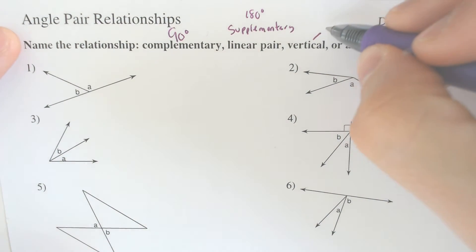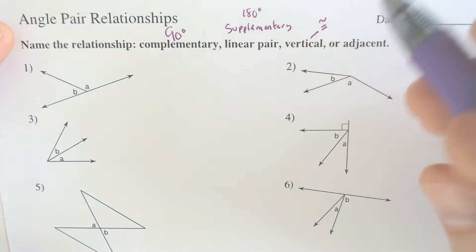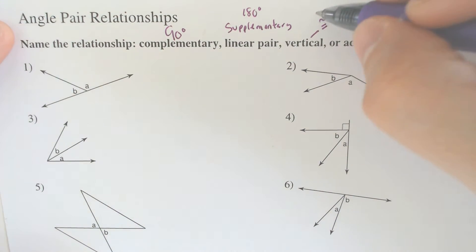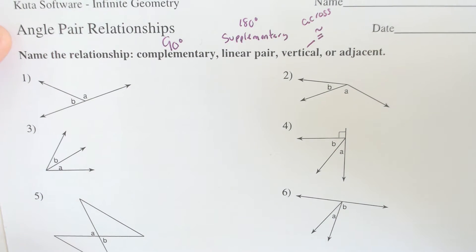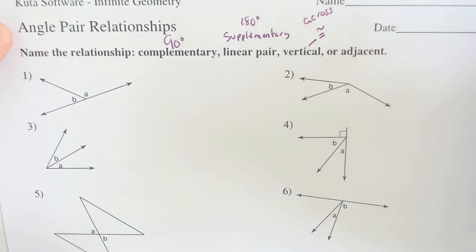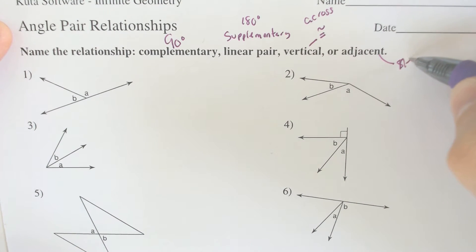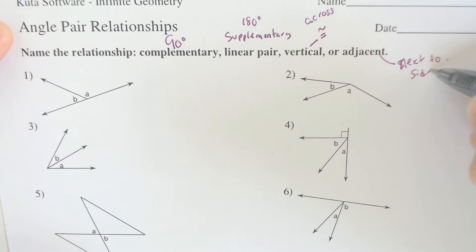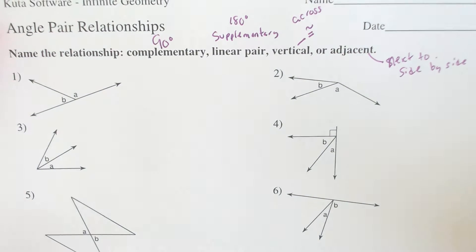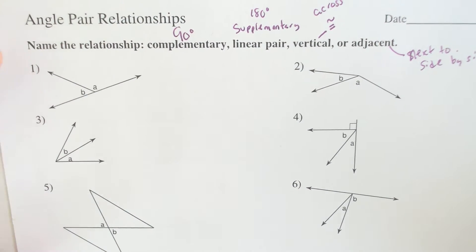Vertical angles are equal to each other or congruent to each other, and that is because they are across from one another. So that would be a better way to memorize it. And adjacent angles simply mean that they are next to each other, side by side. They don't equal each other or add to 180 or anything, they're just two angles that are next to each other.